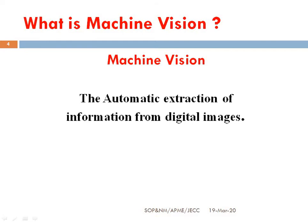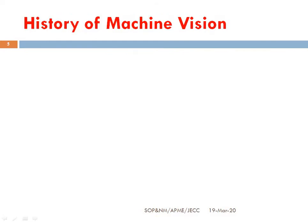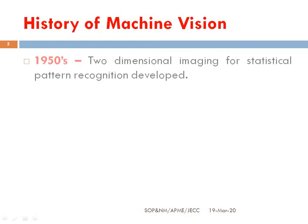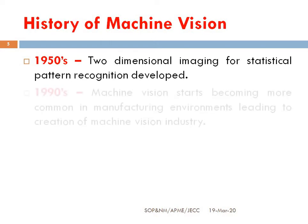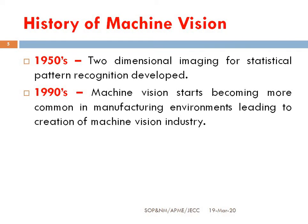Next, we are going to look at the history of machine vision. In the 1950s, a system was introduced for two-dimensional imaging for statistical pattern recognition. The system was further modified in the 1990s, when machine vision became more common in manufacturing environments, leading to the creation of the machine vision industry.